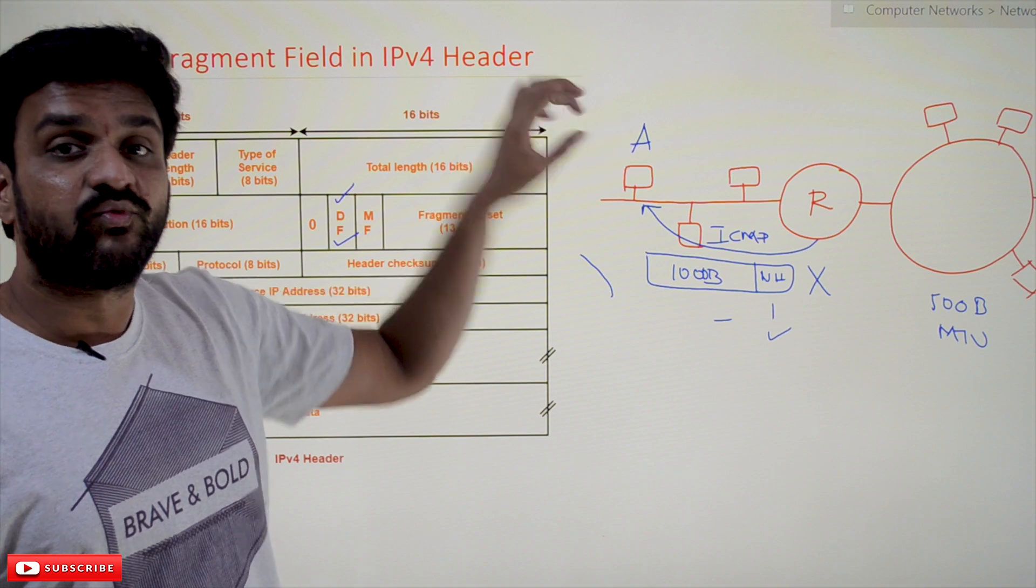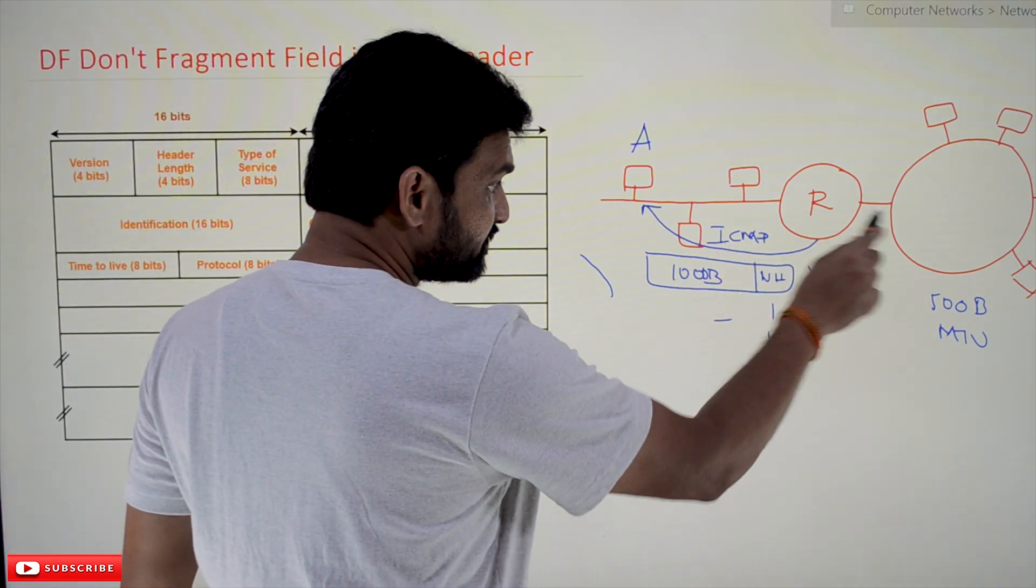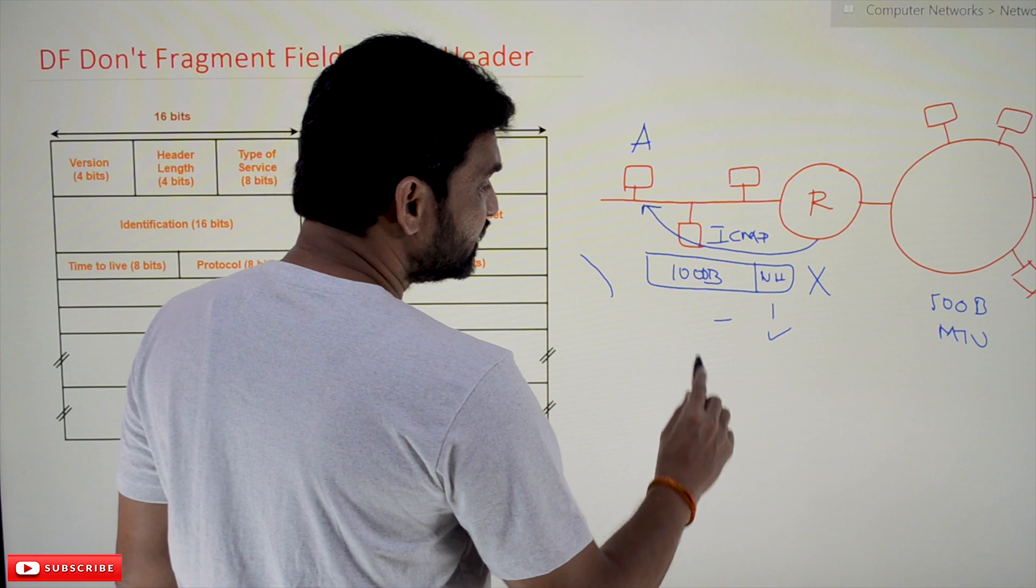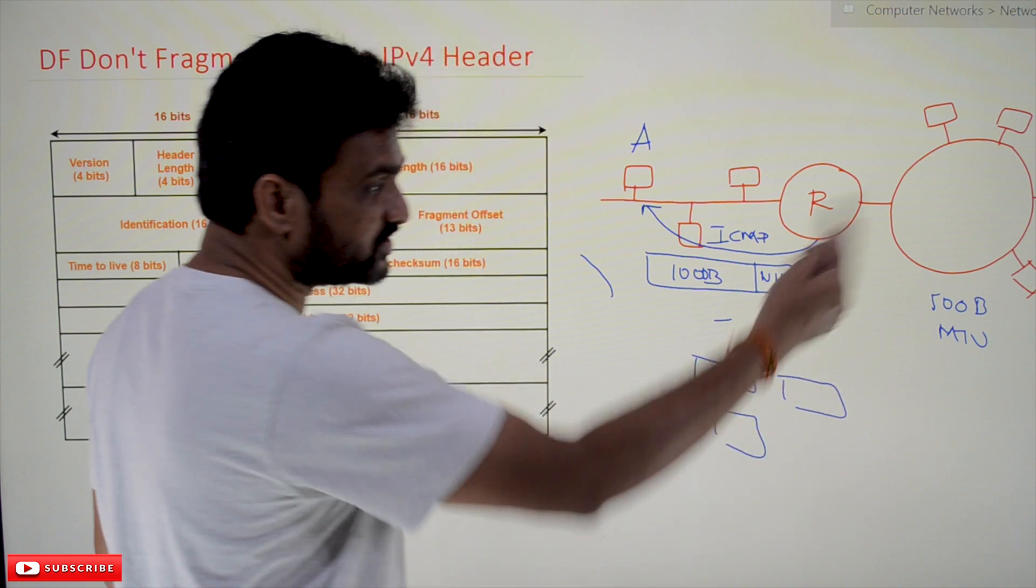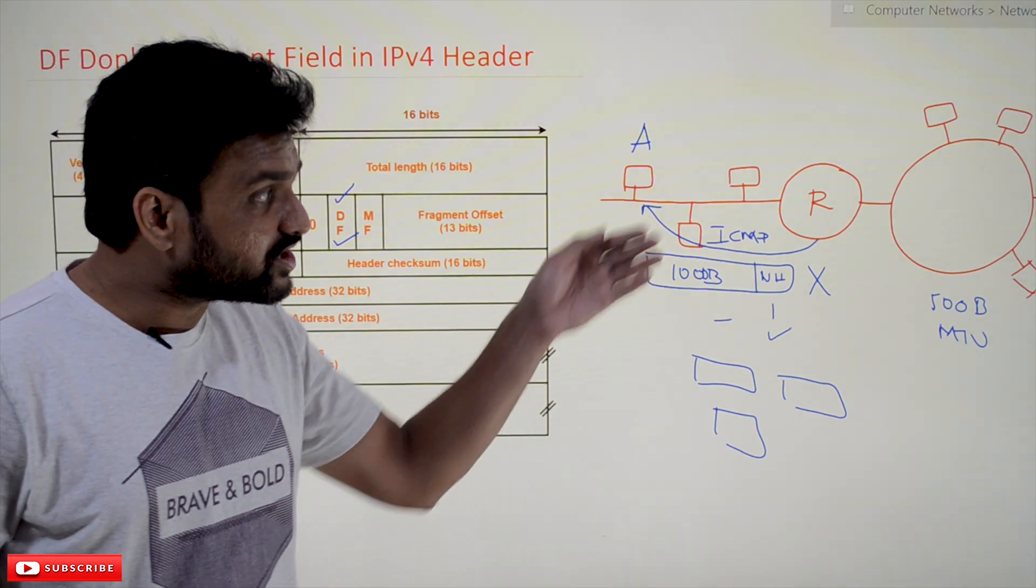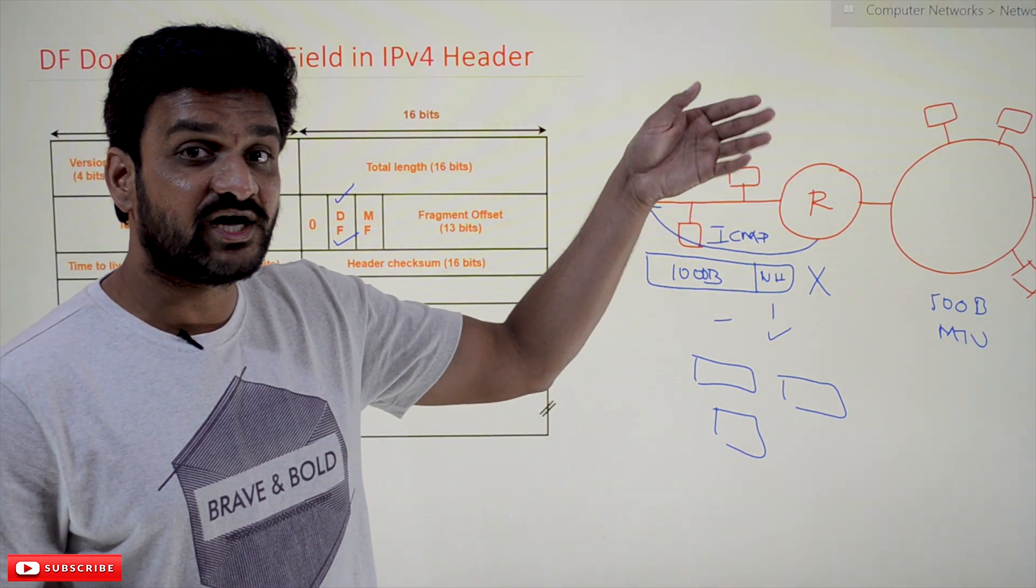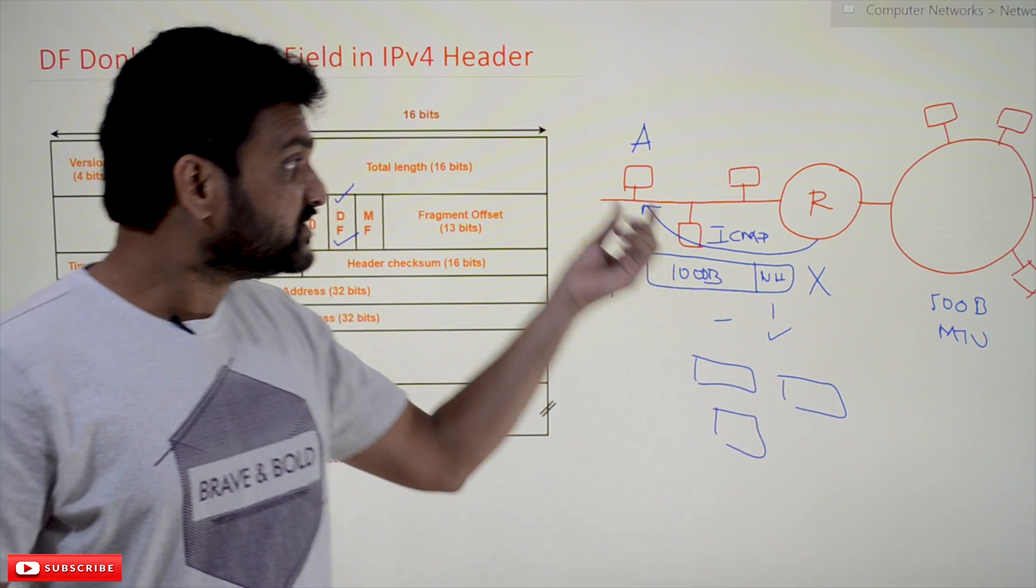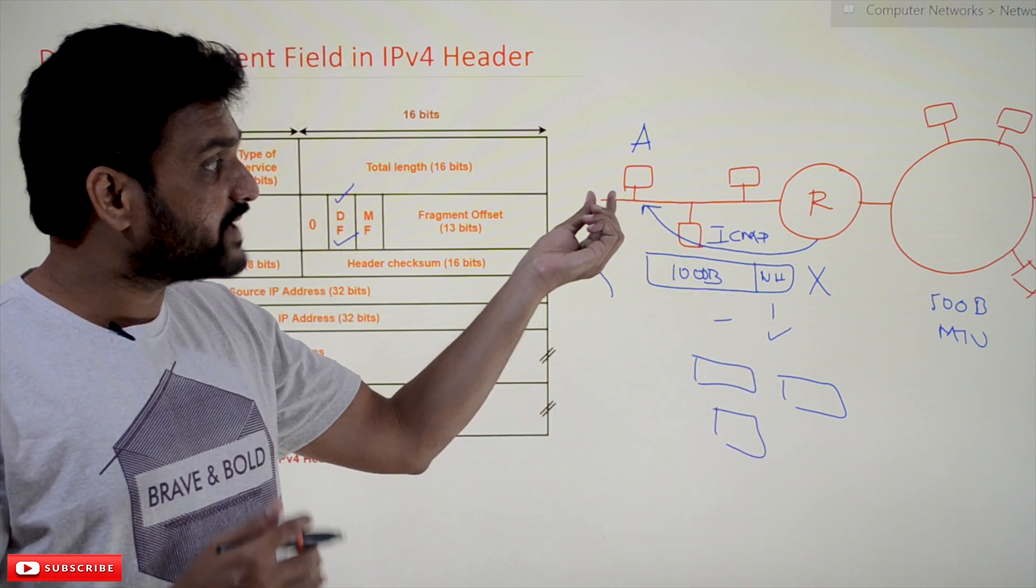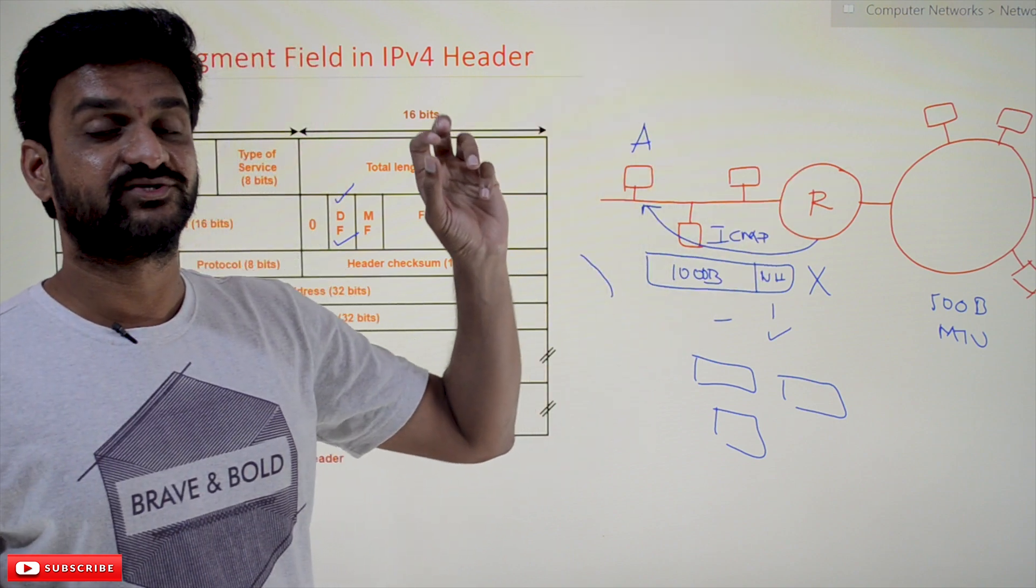Now, what the sender will do is, based upon the router's requirement, it will divide that packet into small pieces. Based on the requirement, the sender will divide that packet and again transmit it.